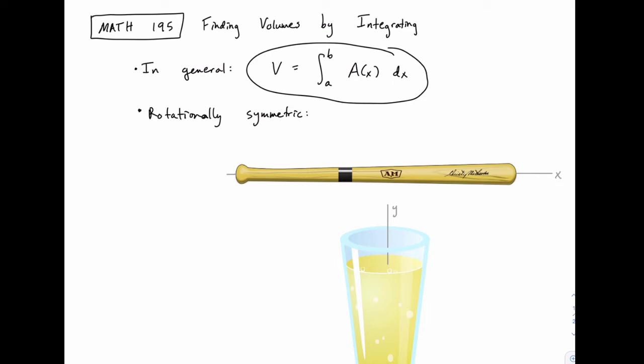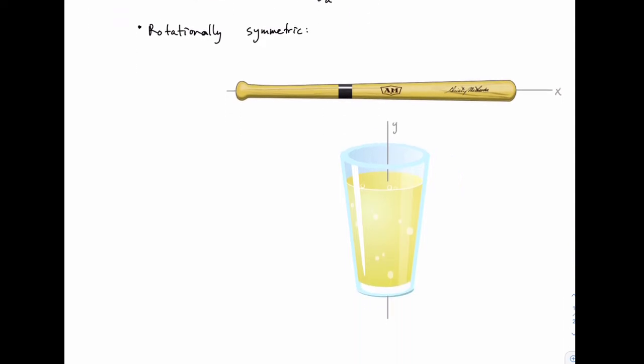In this section, we're going to start dealing with a specific class of geometric objects — ones that have some symmetry, and specifically rotational symmetry. I have two examples here of rotationally symmetric objects: one is a baseball bat, and the other is a glass or a cup.